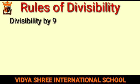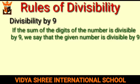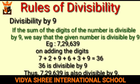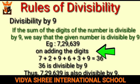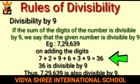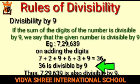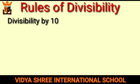Next is divisibility by 9. If the sum of the digits of the number is divisible by 9, we say that the given number is divisible by 9. For example, let us take the number 7,29,639 — adding the digits, 7 + 2 + 9 + 6 + 3 + 9, we get the sum as 36, which is divisible by 9. So we can say 7,29,639 is also divisible by 9.